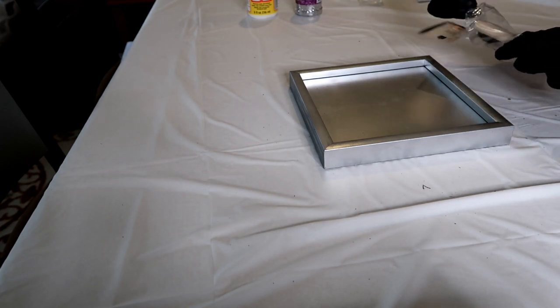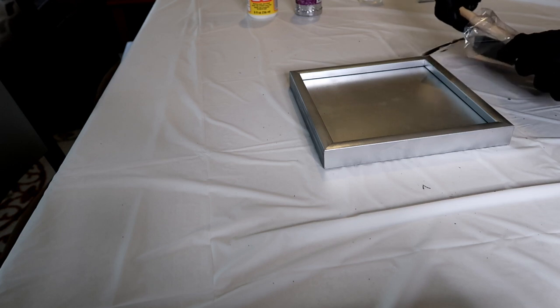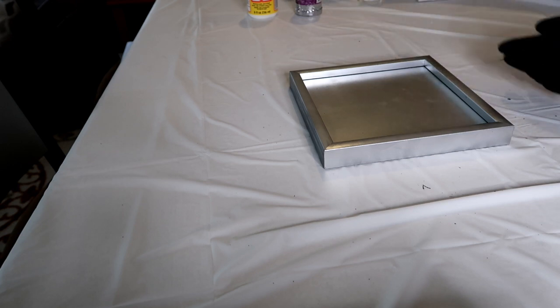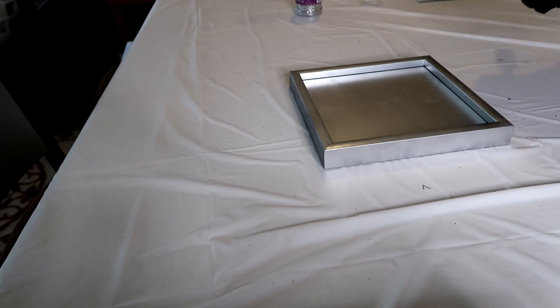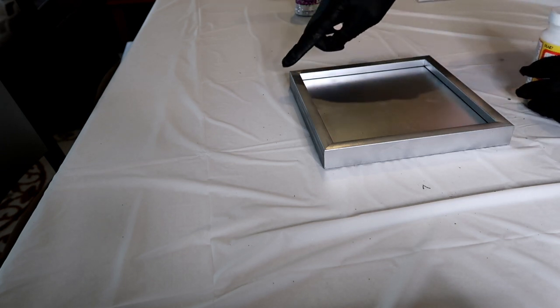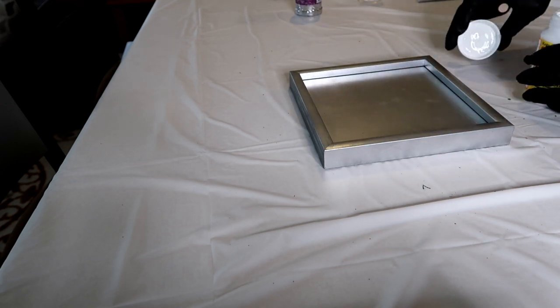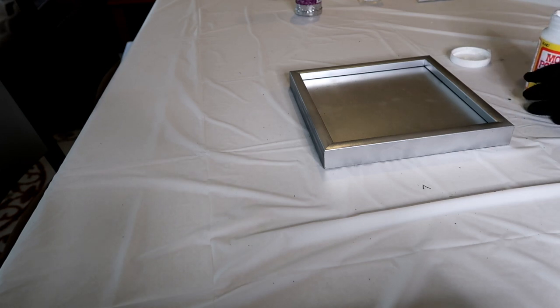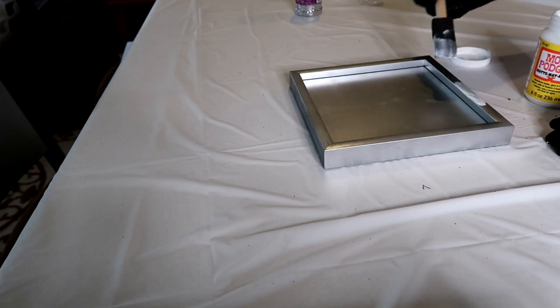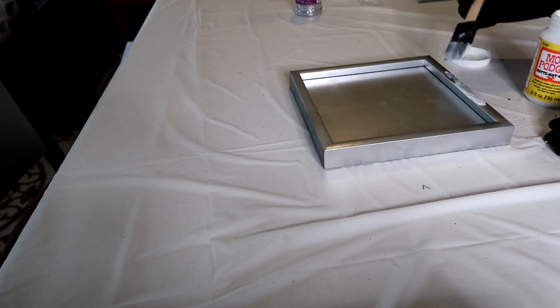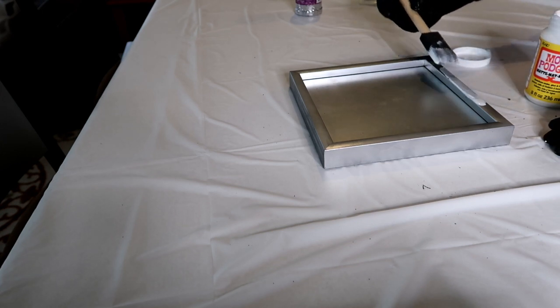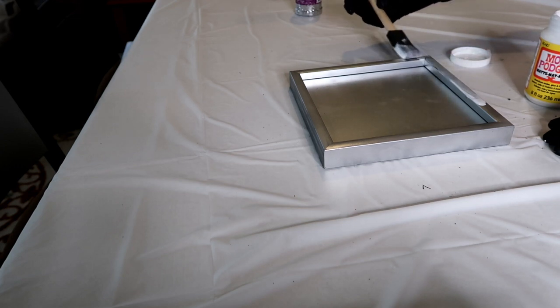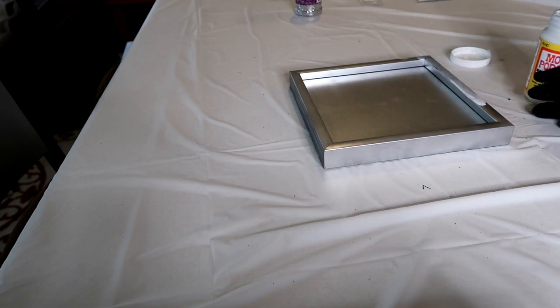We're going to use our Mod Podge and just start coating the top of our picture frame. This is just going to give it a nice even layer of adhesive so that I can put some silver glitter on it.